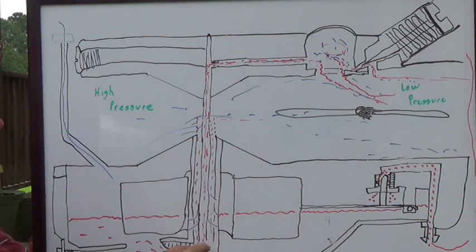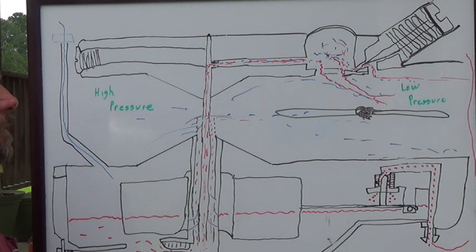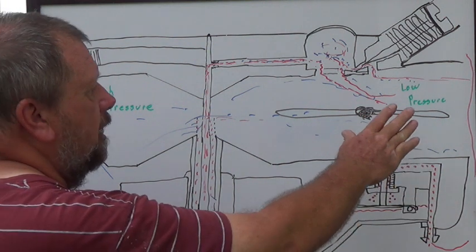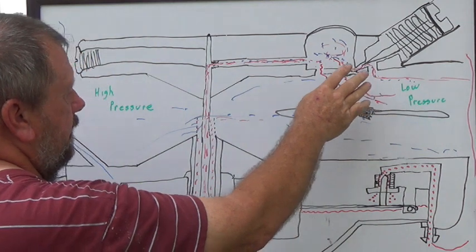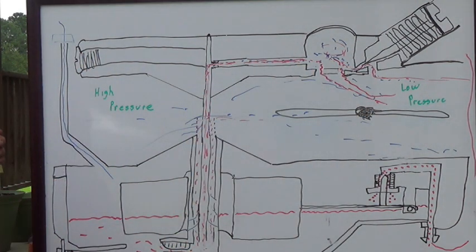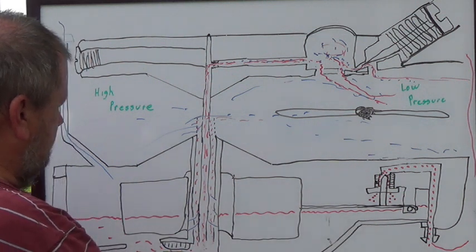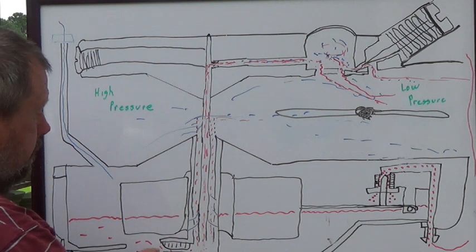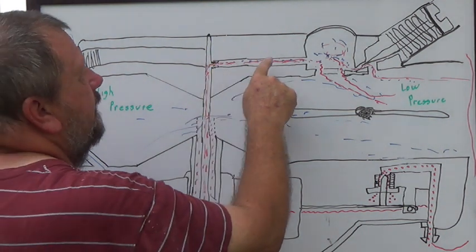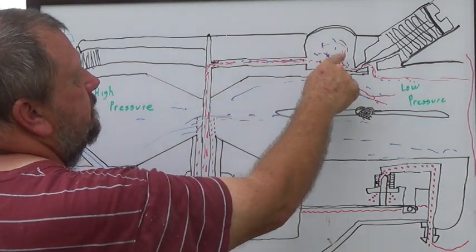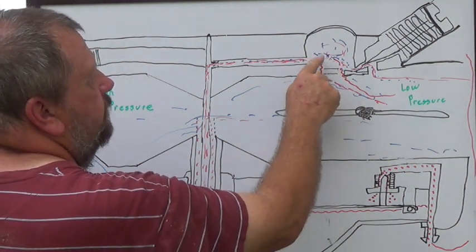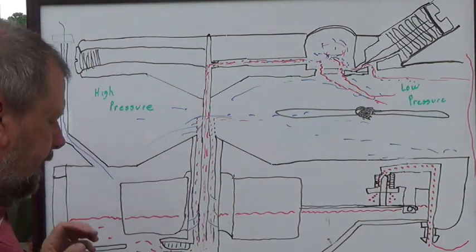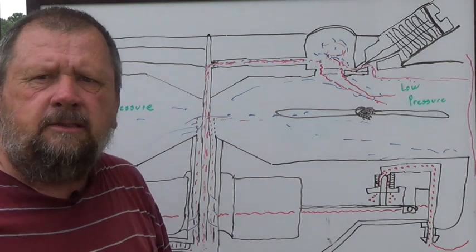Now you can see, when you're working on your carburetor — if you've got an idle issue, you know it's here. If you've got an intermediate speed issue, you know it's here. A lot of people say their boat doesn't want to idle. Well, you see the process now. It starts right at the bottom of the bowl, goes through the high speed orifice, up the emulsion tube, comes right into here, goes into the mixing chamber — this is all low pressure — and it mixes air and fuel, and it comes out here. If you can't idle, you don't have the proper mixture ratio.